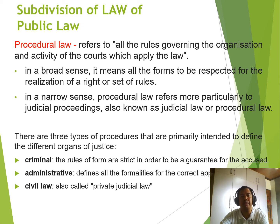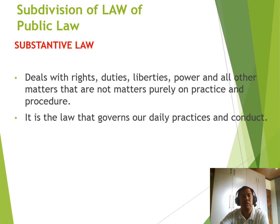There are three types of procedures primarily intended to define the different organs of justice: criminal procedure, where rules of form are strict in order to guarantee the accused; administrative procedure, which defines all formalities for the correction and application; and civil law procedure, also called private judicial law. Substantive law deals with rights, duties, liberties, powers, and all matters that are not purely matters of practice and procedure.